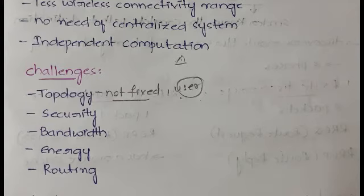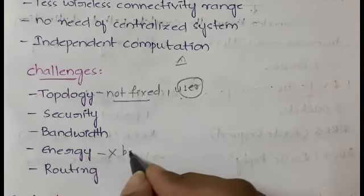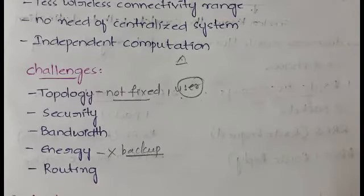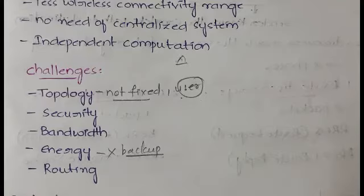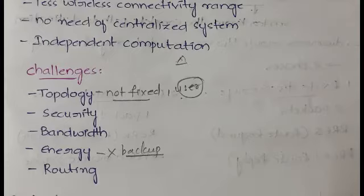The third challenge is bandwidth, which is also limited — you cannot transmit messages over a long distance. The fourth challenge is energy. There is no energy backup in MANET; the network energy is equal to the mobile node's battery power. If your mobile battery drains down, the MANET power also goes down. So energy is a significant problem.